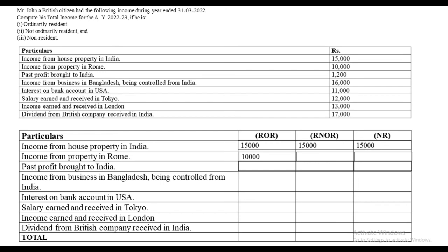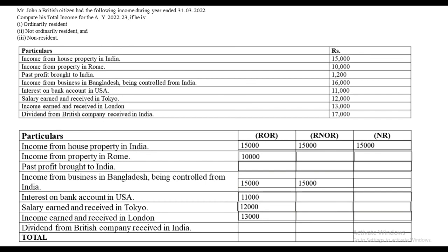Income from business in Bangladesh being controlled from India — since it is controlled from India, the first two people will need to pay tax. Interest on bank account in USA — USA is foreign income, so only the first person pays tax. Salary earned and received in Tokyo — again foreign income, only the first person pays tax. Last, dividend from a British company but received in India — since it is received in India, everyone pays tax for it.